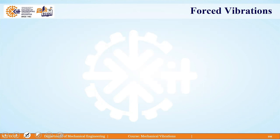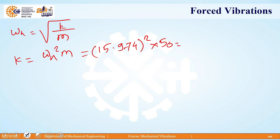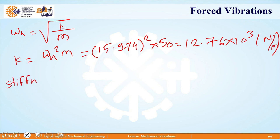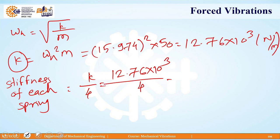Since omega_n equals the square root of k by m, we get k equals m × omega_n². So k equals 50 × (15.974)², giving 12.76 × 10³ Newton per meter. To calculate the stiffness of each spring, we divide total stiffness by 4 (since there are 4 springs): 12.76 × 10³ divided by 4 equals 3.19 × 10³ Newton per meter.